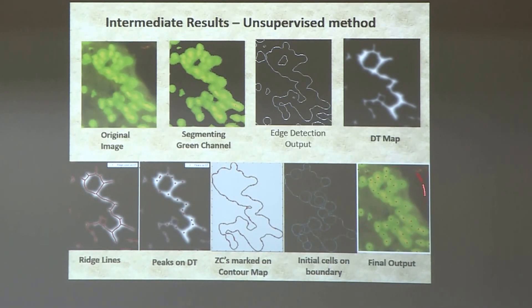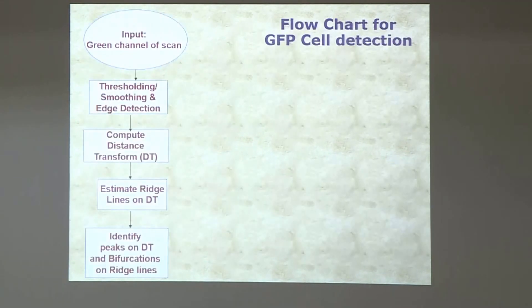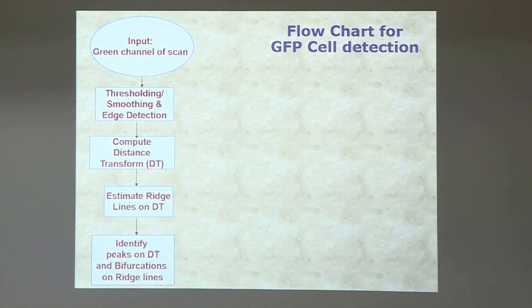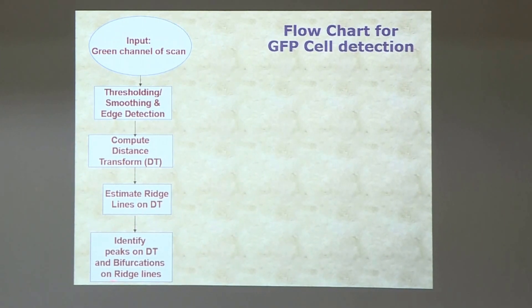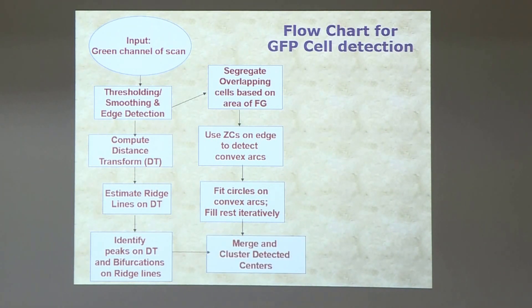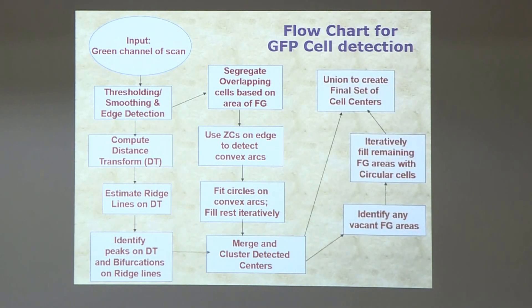We combined results from both approaches — the distance transform peaks and the convex arc fitting — iteratively filling in cell locations in vacant foreground areas. The algorithm sequence is: smoothing, thresholding, edge detection, distance transform, ridge lines, bifurcation peaks; and in parallel, zero-crossings of edges, circle fitting on convex arcs, and iterative merging. The method is essentially unsupervised with only a few fine-tuned parameters.